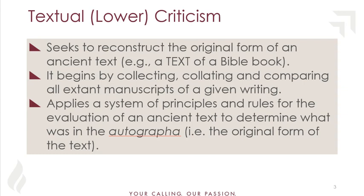Textual criticism begins by collecting, collating, and comparing all extant existing manuscripts of a given writing. It evaluates those manuscripts in terms of what kind of changes or variations exist between the handwritten manuscripts. Principles and methods are applied to determine the most likely original form, which we call the Autograph or Autographa.